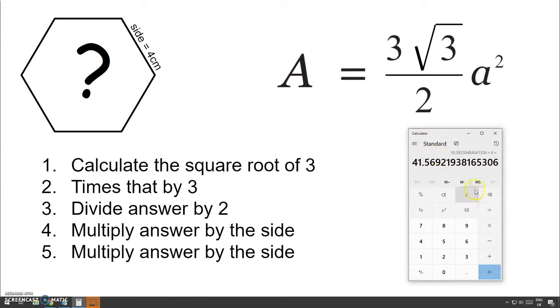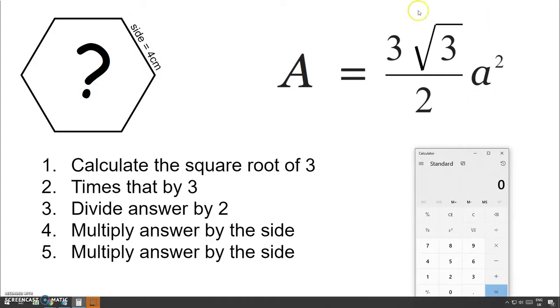or 41.57. There you go. So, that's the first way, pretty straightforward, if you can remember this equation, and you're okay using the square root button on your calculator. Good. So, that's the first way.